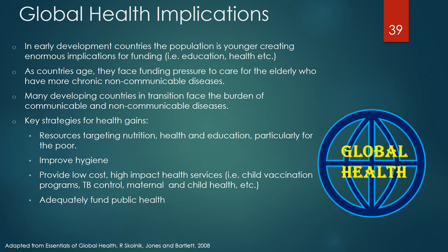As countries age, they face increased funding pressure to care for the elderly who have more chronic non-communicable diseases. Many developing countries in demographic transition stages 2 and 3 face the double burden of communicable and non-communicable diseases. Key strategies for health gains in developing countries include providing enough resources to adequately target nutrition, health, and education, particularly for the poor; improving hygiene through policies, education, and community engagement; providing low-cost, high-impact health services like child vaccinations, tuberculosis control, and maternal and child health programs; and adequately funding public health.